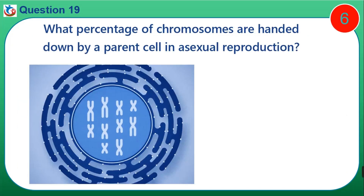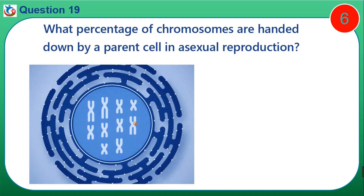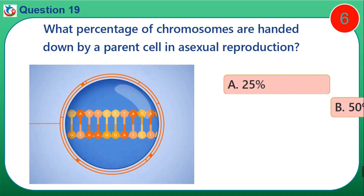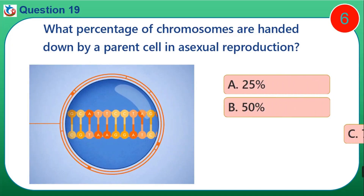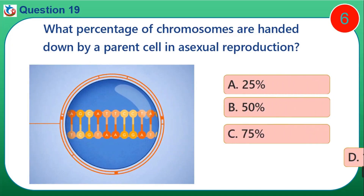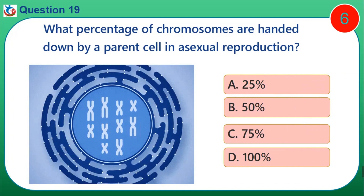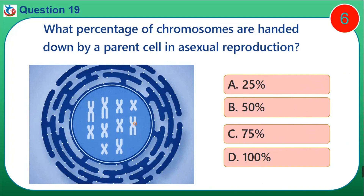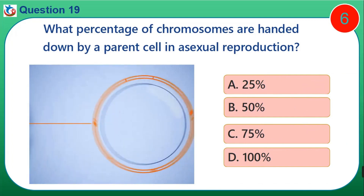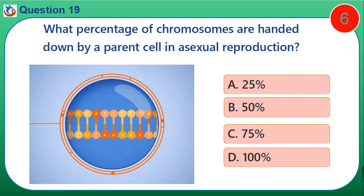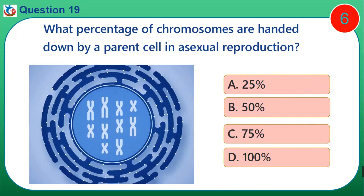Question 19. What percentage of chromosomes are handed down by a parent cell in asexual reproduction? A. 25%. B. 50%. C. 75%. D. 100%.